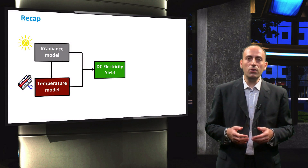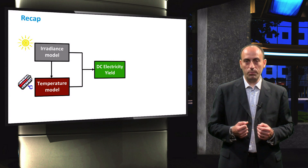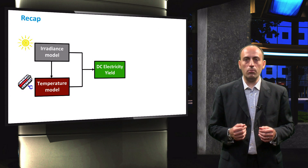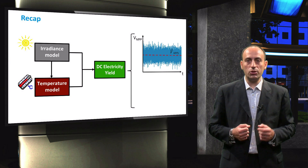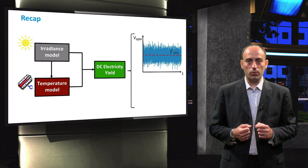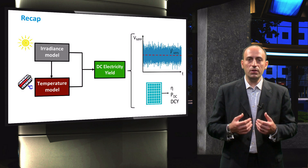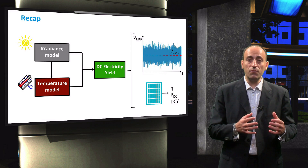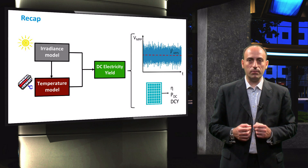In this video, you learned how to model the DC performance of the PV module. We combined the irradiance model and the temperature model to calculate the maximum power point voltage of the PV module. Moreover, we calculated the module efficiency, DC power, and DC yield. In the next video, we shall use this information to accurately design a grid-connected PV system.